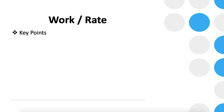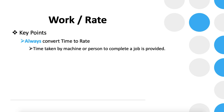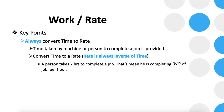Let's start with some key points. First, always convert time to rate. In most cases, the time taken by a machine or person to complete a job is provided, and we need to convert time to rate — rate is always the inverse of time. For example, if a person takes two hours to complete a job, they complete half the job each hour. When we have a complete job, the rate is simply the reciprocal of the time.